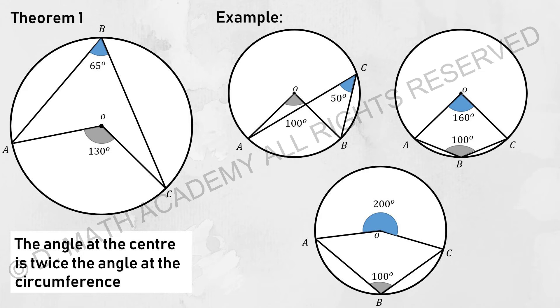For this one, the ABC will actually be half of AOC, which is 65. So AOB and ACB - ACB will be half of AOB, which is 50.